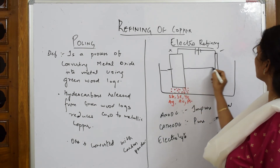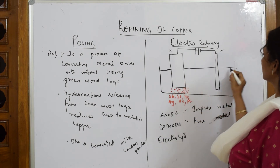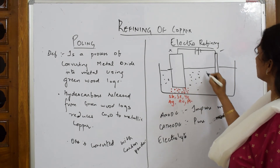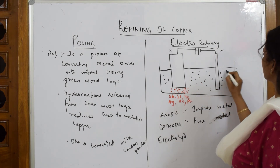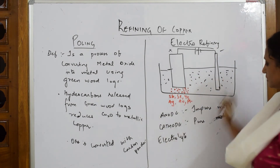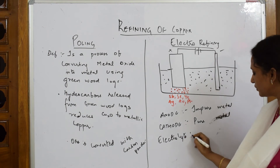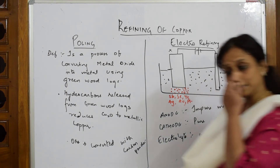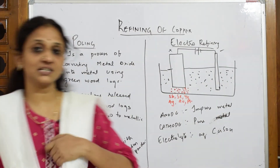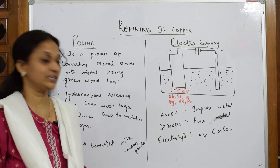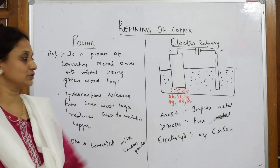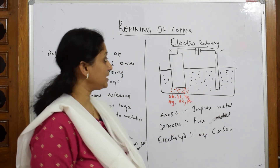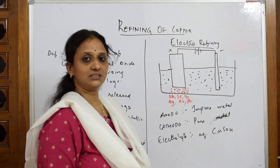The electrolyte used here is copper sulfate solution. The same salt is taken so that the exchange of ions is easy. Sulfuric acid can also be added to increase the conductivity of the whole solution, just as was done for zinc.